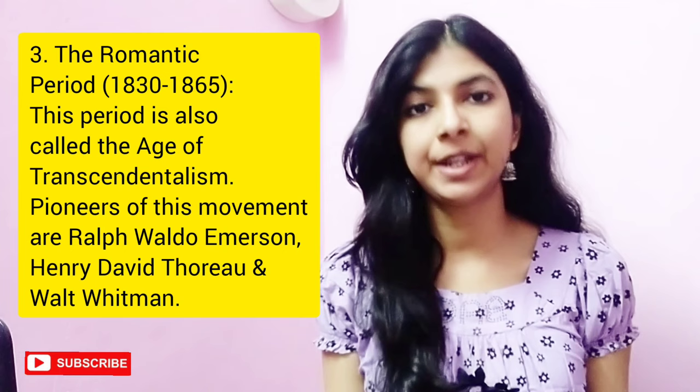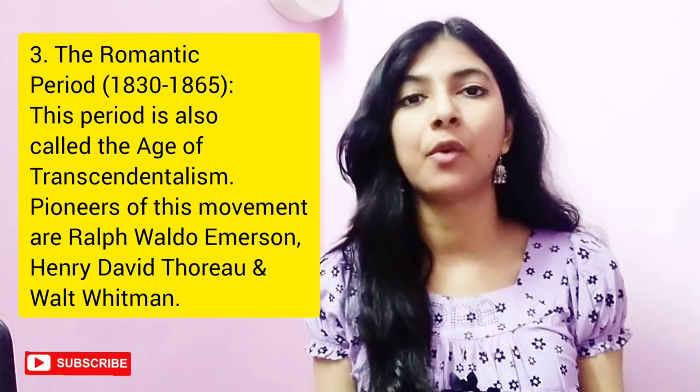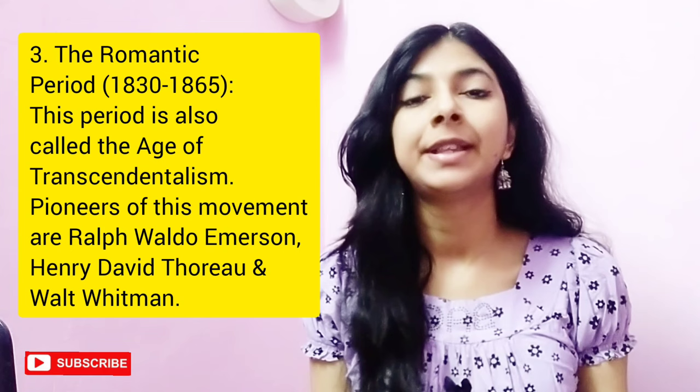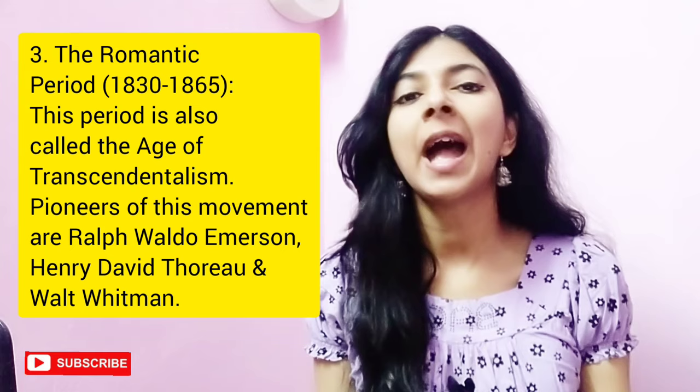Next, we have the Romantic Age, 1830 to 1865. In the Romantic Age, American literature came of age. This period is also called the Age of Transcendentalism. Transcendentalism was a literary and philosophical movement pioneered by Ralph Waldo Emerson, Henry David Thoreau, and Walt Whitman. Other notable writers of this period are Edgar Allan Poe, Herman Melville, and Nathaniel Hawthorne. A notable poet of this period is Emily Dickinson.